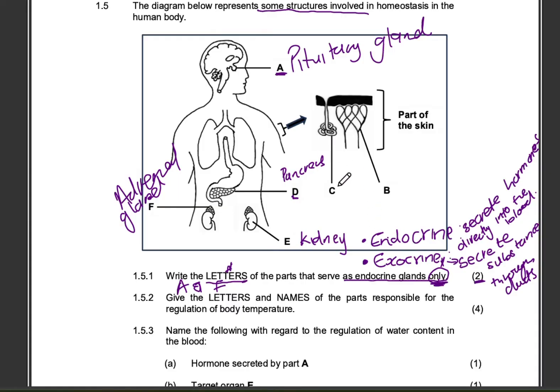Obviously, C will be incorrect because this is a sweat gland. And a sweat gland is going to secrete sweat through ducts onto the surface of the skin. So, that's definitely not an endocrine gland. And B is a blood vessel. It's not a gland.